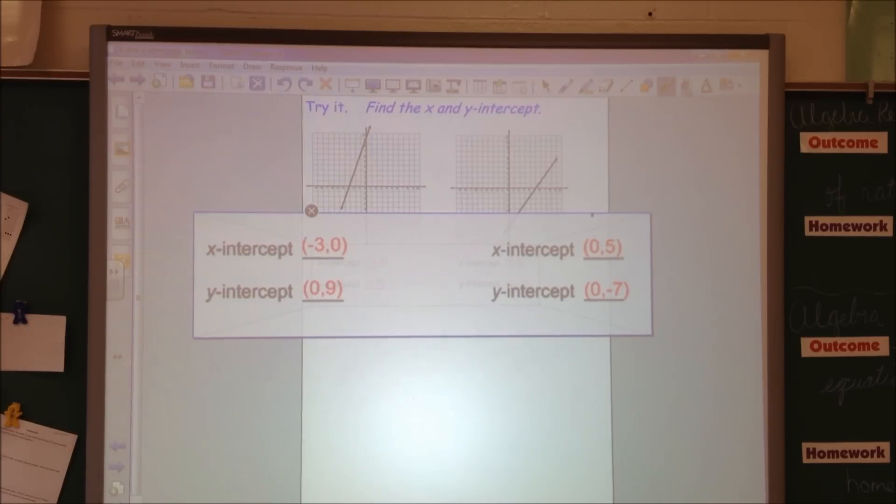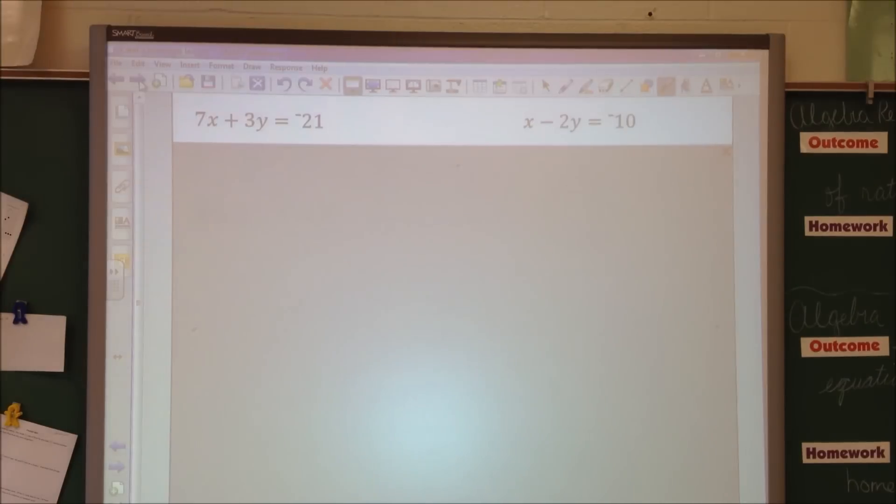Now I want you to copy down these two equations. Pause up the video. I'll make them bigger. Let me get this...there's the magic pen. Let me try it again. Guess I have to go slow. Still not getting it. Sorry, guys. The first one is 7x plus 3y equals negative 21. The second one is x minus 2y equals negative 10.